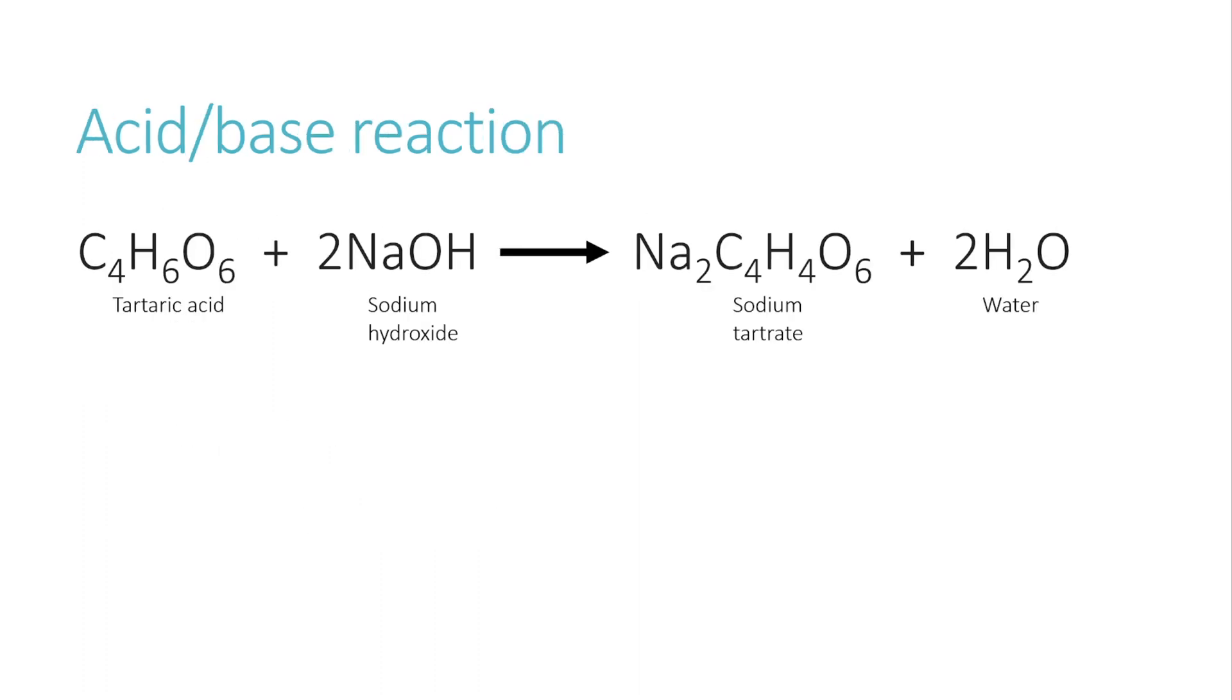Before moving on to explain why we times by 0.75, we need to understand the reaction that's going on here. It's an acid-base reaction where the tartaric acid in the wine is reacting with the sodium hydroxide that you're adding from the burette to make sodium tartrate and water. So it's a very simple acid-base reaction. You've got an acid reacting with a base to make a salt, which in this case is sodium tartrate, plus water.